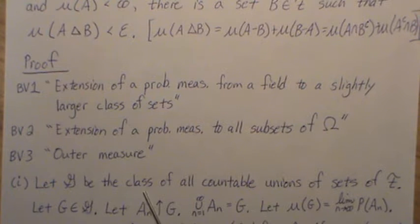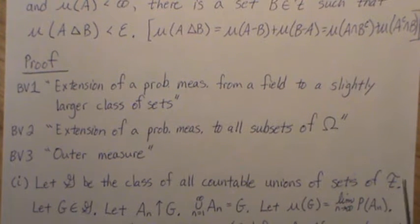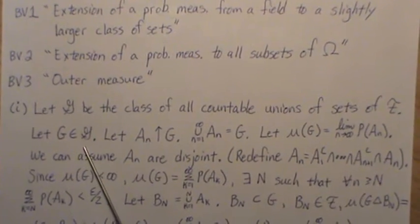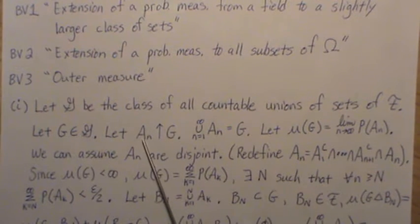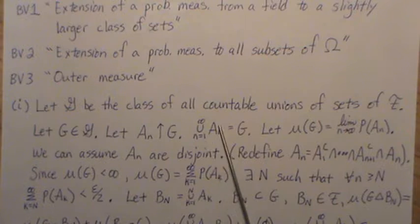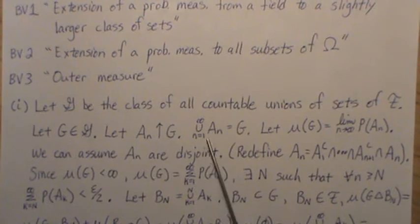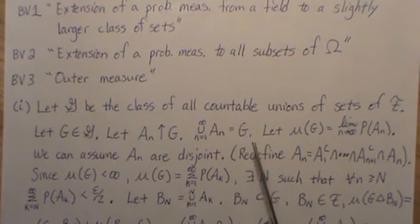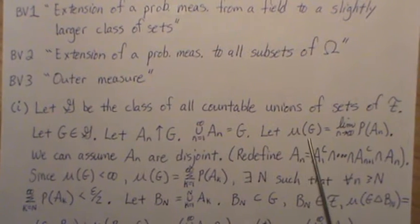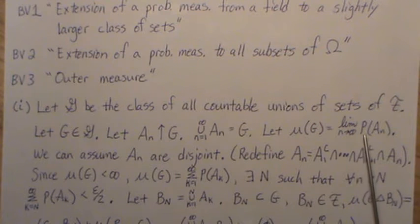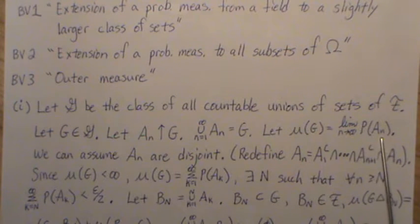Let script G be a class of all countable unions of sets of F, the field. So let G be an element of script G, and let A_n be increasing sets to G. That means that the union, infinite union of these A_n equals G. So let the measure of G equal to the limit as n goes to infinity of the measure of these A_n.